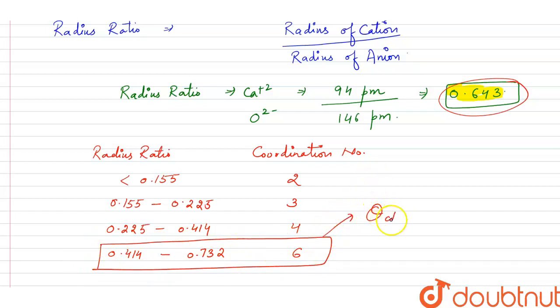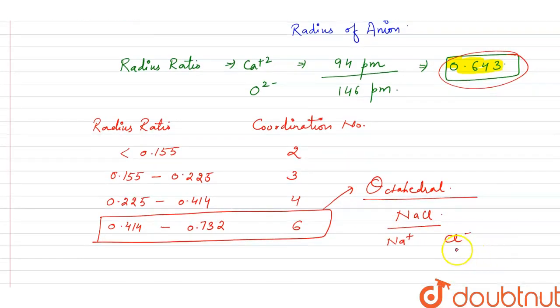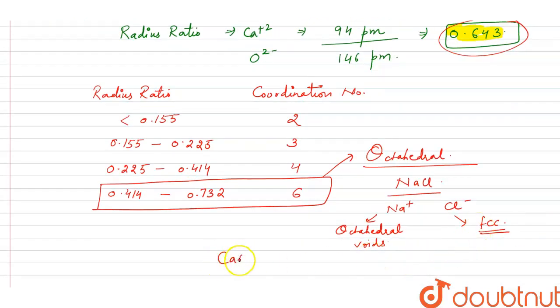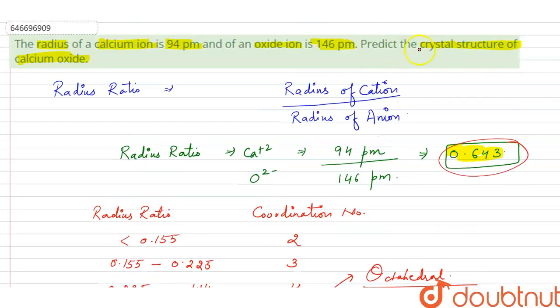So our geometry of the compound will be octahedral. And one of the examples of octahedral geometry is NaCl, in which Na⁺ is cation and Cl⁻ is anion. The Cl⁻ occupies the FCC arrangement while Na⁺ occupies octahedral voids. So similarly, similar to that of NaCl, in this CaO, CaO has octahedral geometry. So we have to predict the crystal structure of calcium oxide. It is octahedral and like NaCl structure.